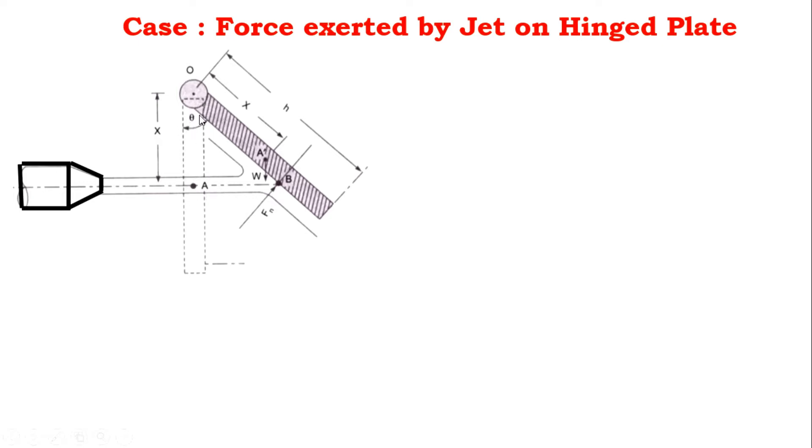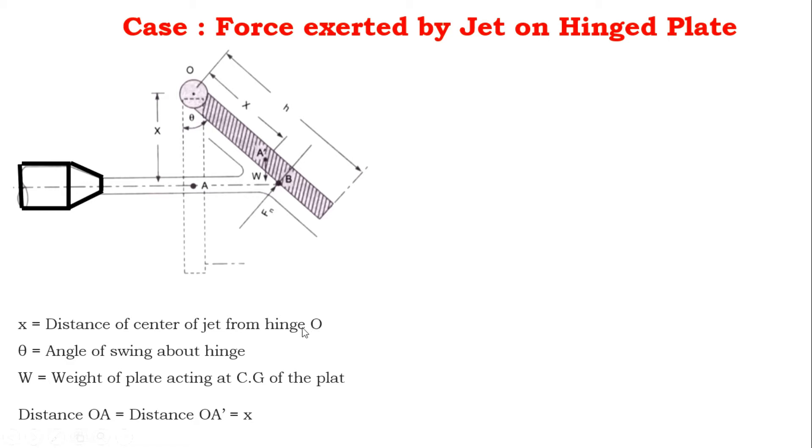Let us consider the following terms from the above diagram. X is the distance of center of jet from hinge O. Theta is the angle of swing about the hinge. W is the weight of plate acting at center of gravity of the plate.